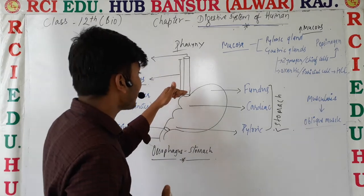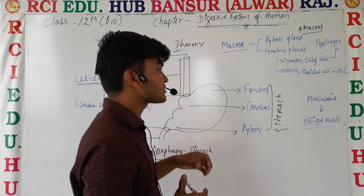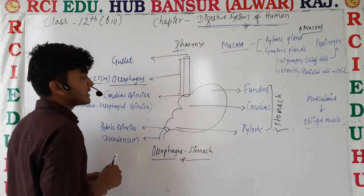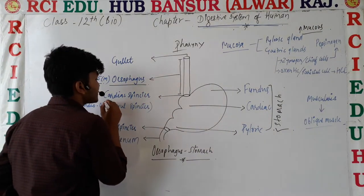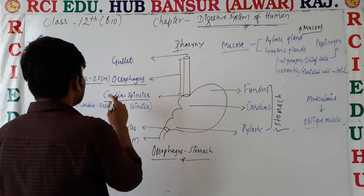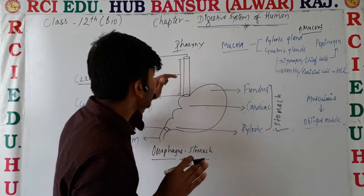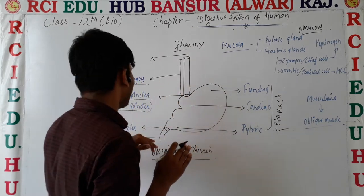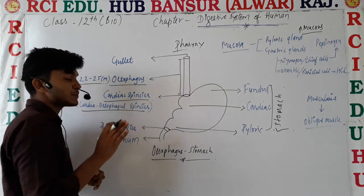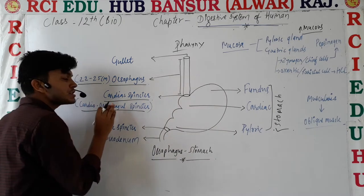The esophagus opens into a J-shaped structure which is called the stomach. Where it opens, there is a sphincter which is called the cardiac sphincter. That sphincter is also known as the cardioesophageal sphincter, and sometimes it is also known as the gastroesophageal sphincter.